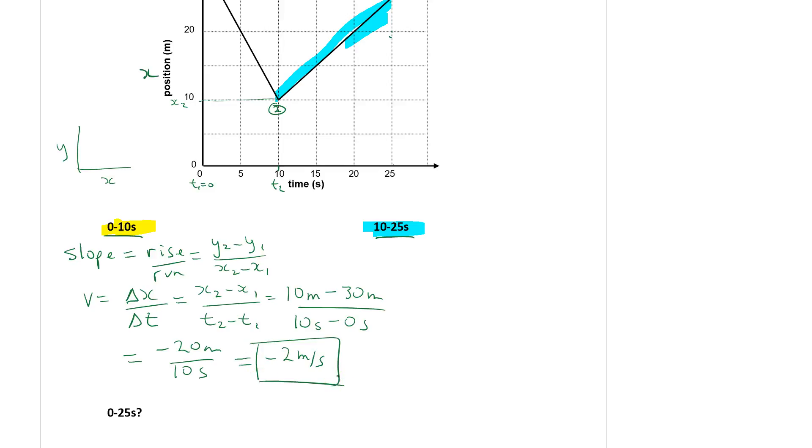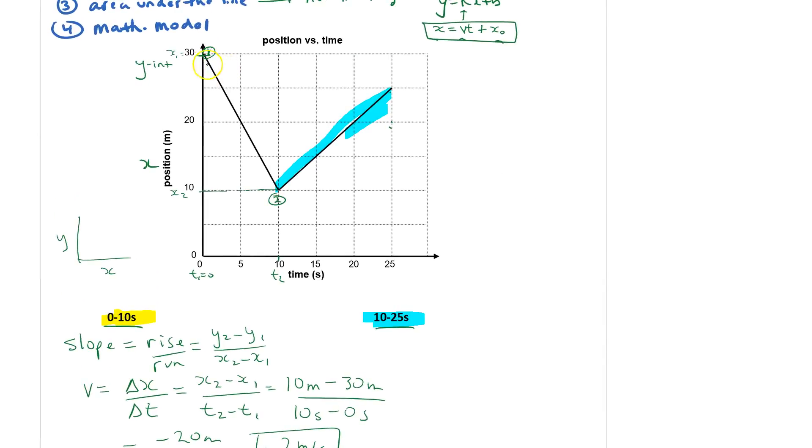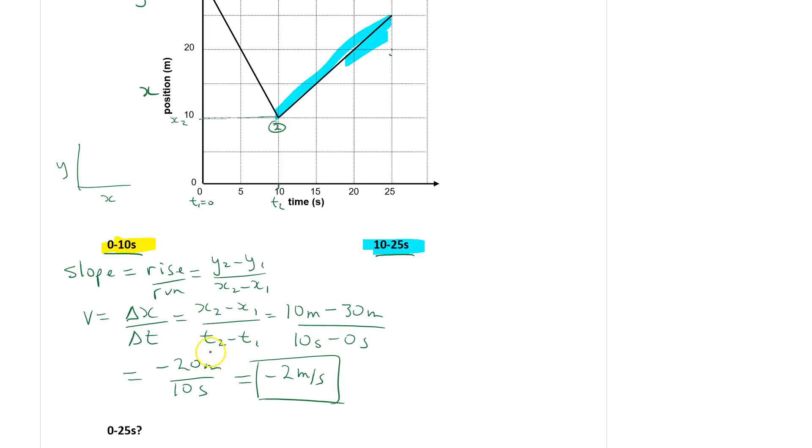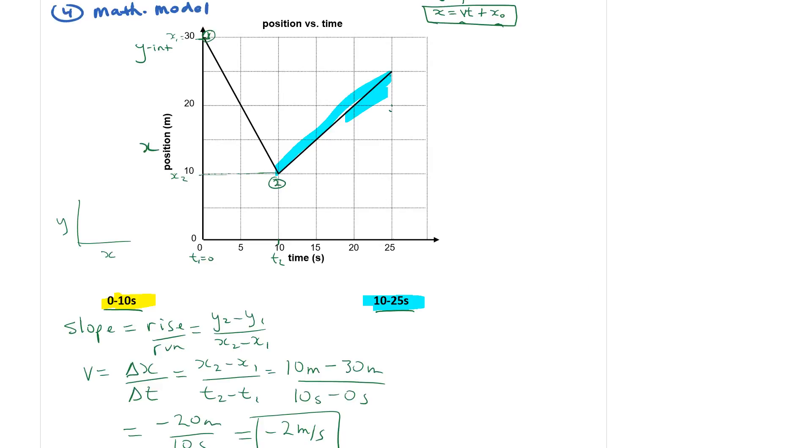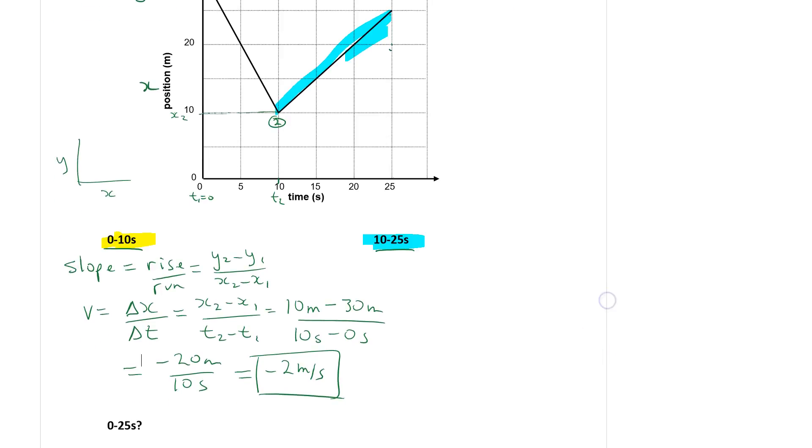If you wanted to just look at this and say it dropped and went from 30 down to 10, so therefore the x values went down by 20 and then put in that minus 20, that's fine. Although the first couple times it may be a good idea to do the x₂ minus x₁. You'll notice that because it goes downhill, that's why it's negative. So it has a negative velocity.